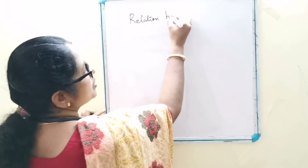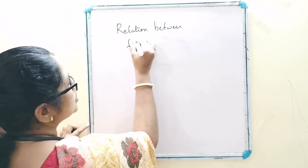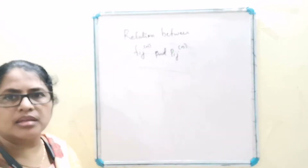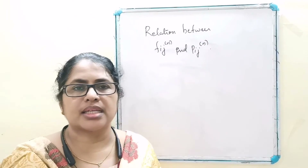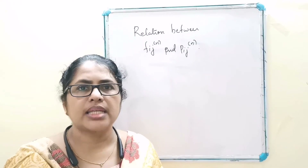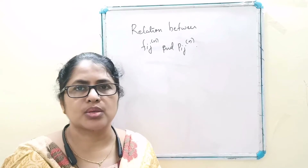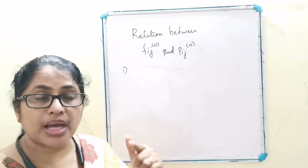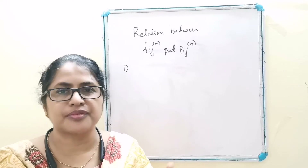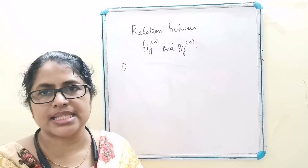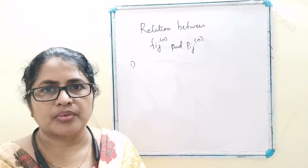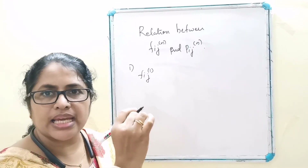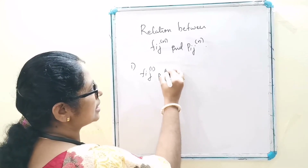Relation between F_IJN and P_IJN. We consider the event corresponding to P_IJN. It may be split into a number of mutually exclusive cases. First: start from I, reach J for the first time in one step, and then reach J in N minus 1 steps, with probability F_IJ1 times P_JJ(N-1).